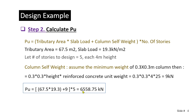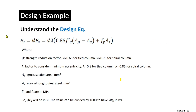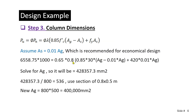This evaluates to an ultimate load of 6,558.75 kN. According to the ACI code design equation, the ultimate capacity is phi times Pn, where phi is 0.65 for a tied column and 0.75 for a spiral column. Lambda is a factor accounting for minimum eccentricity: 0.8 for tied columns and 0.85 for spiral columns. The equation uses 0.85 fc' times the gross area minus steel area, plus fy times the steel area. Units must be consistent — divide by 1000 to convert to kN.